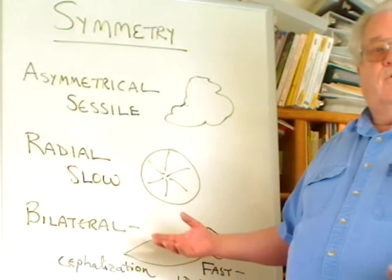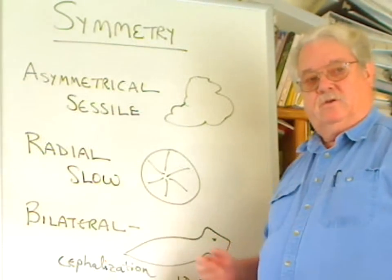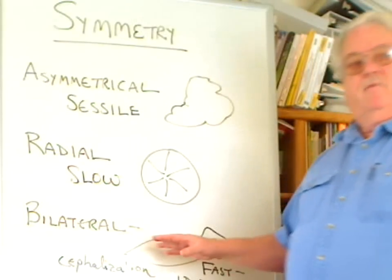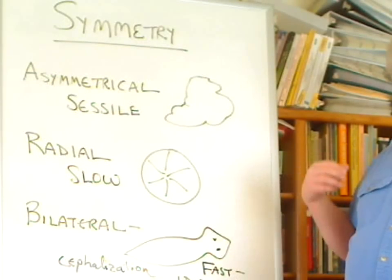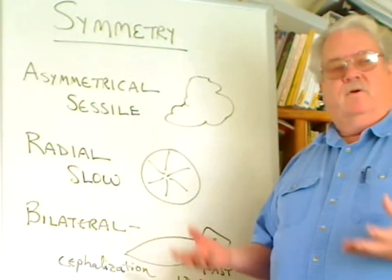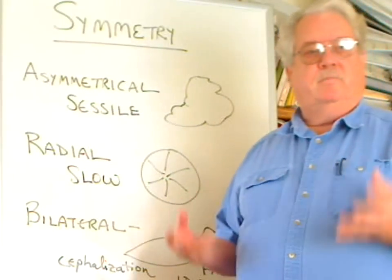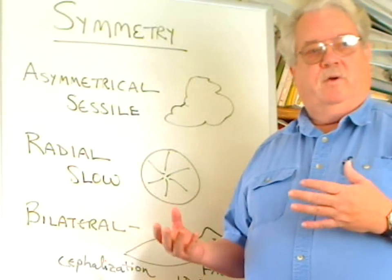Something else that goes along with bilateral symmetry and the streamlining for moving in one direction is what we call cephalization, or the formation of a head. Effectively, whatever part of the body is going to be moving into the environment first is going to have localization of special senses: vision, smell, taste, etc., in order to sense that environment as it moves into it.